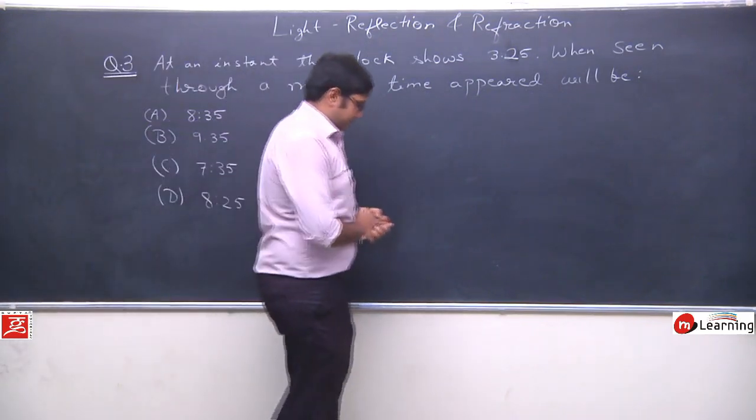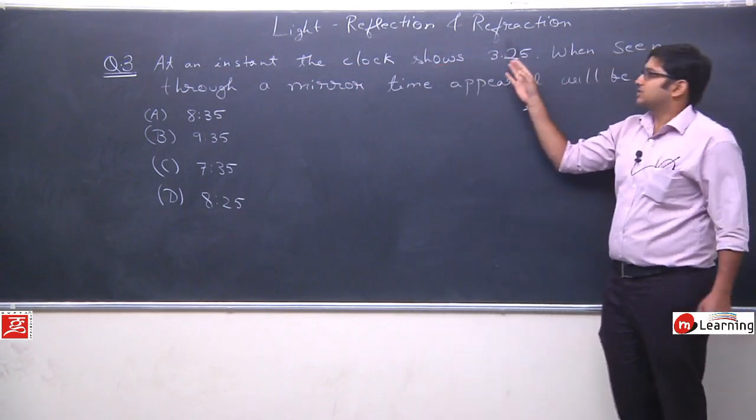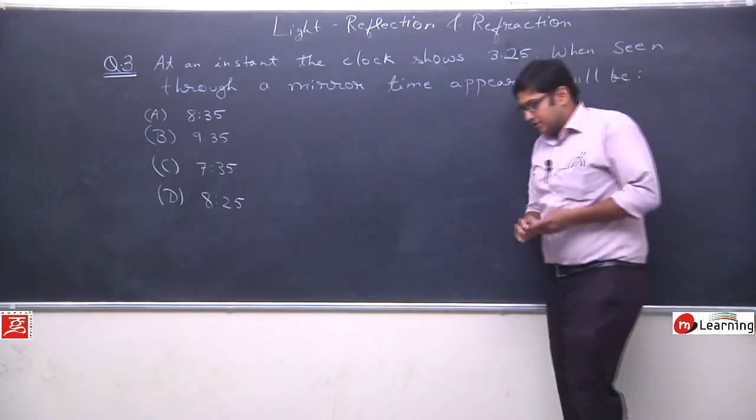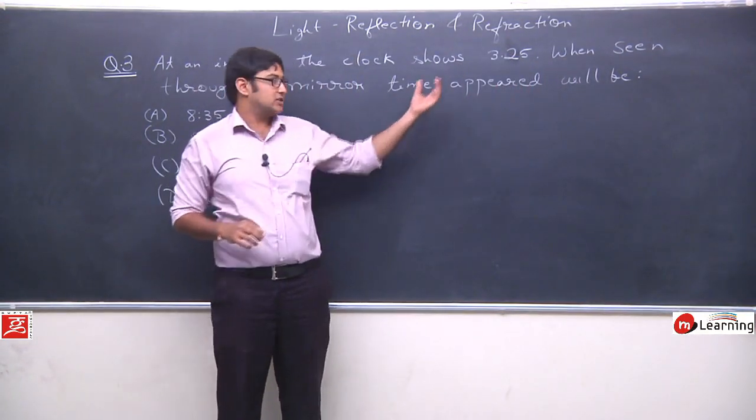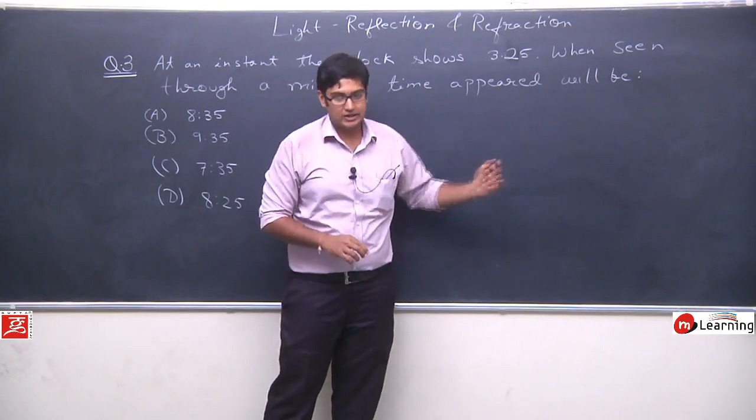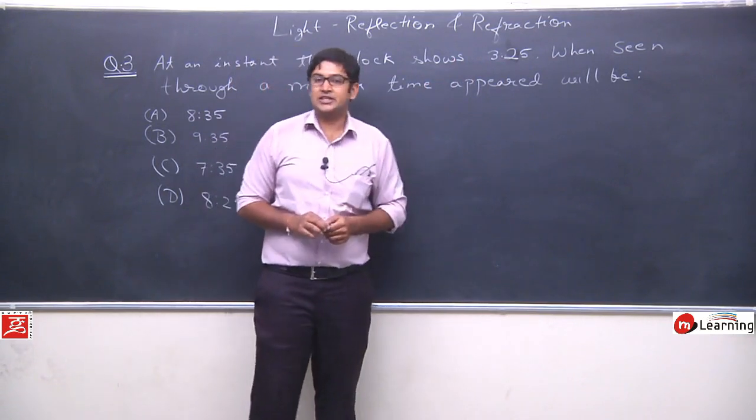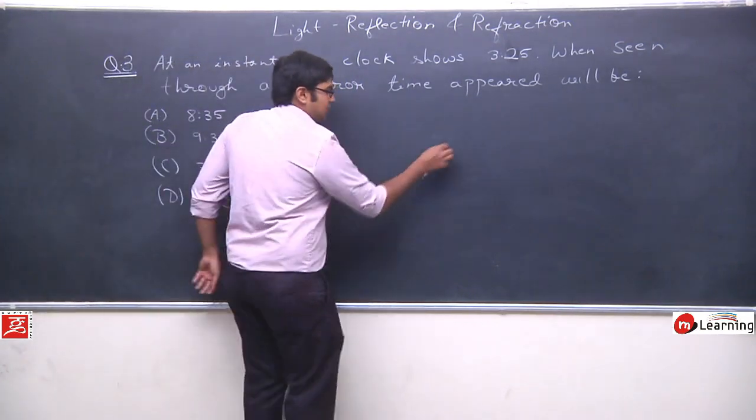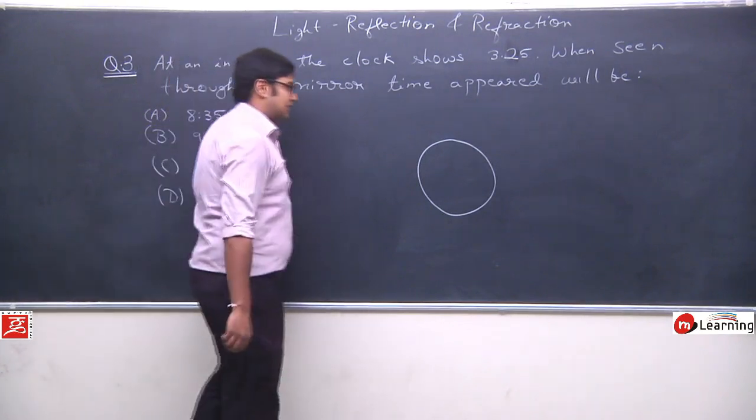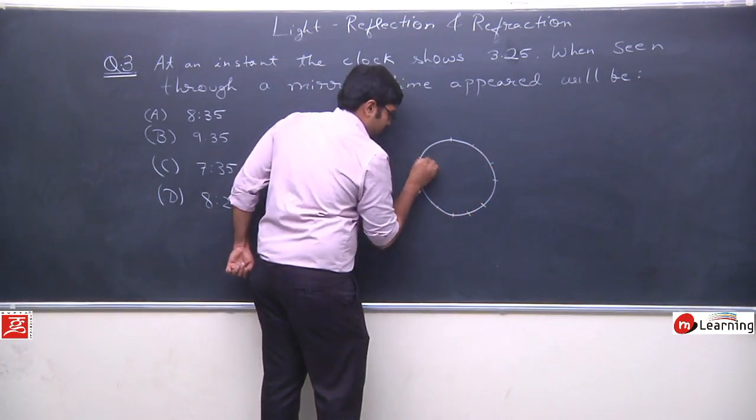Let us discuss the third question. The question says, at an instant, the clock shows 3:25. When seen through a mirror, the time appeared will be. So, it is very obvious, we can understand that 3:25 will not appear. Something else will appear. Let us draw a clock. It will look something like this.